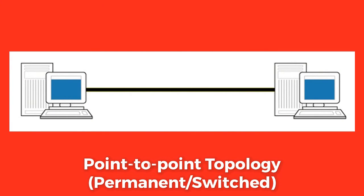Moving on to types of networking topology, first we have point-to-point topology. It is the simplest topology with a dedicated link between two endpoints and is the basic model of telephony. It is of two types: permanent or dedicated point-to-point topology, where the link is permanently associated with the two endpoints — a tin can telephone is its example — and switched point-to-point topology, which uses packet switching and circuit switching technology where the circuit can be dynamically set up and dropped whenever needed.